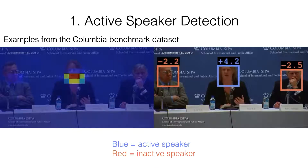We will now demonstrate how our method works on these applications. The first application is active speaker detection. For a given video clip, the task is to detect potential speakers and determine which ones are active at every moment in time. In the following clips, we show the output of our trained model by marking the speakers predicted as active with a blue bounding box and inactive ones with a red box. First, we show some examples from the Columbia dataset, which is a standard benchmark for this task.